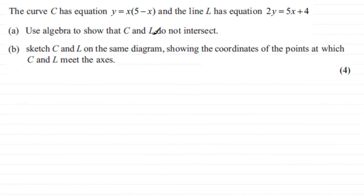Now in the previous part of the question we had the curve C with equation y equals x times 5 minus x and the line L having equation 2y equals 5x plus 4 and we found in part A that they didn't intersect.